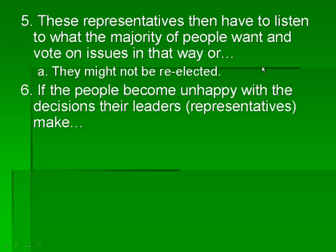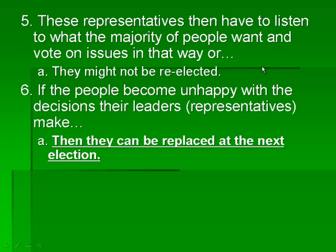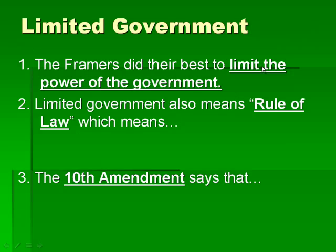If the people become unhappy with the decisions their leaders or representatives make, then they can be replaced at the next election. If the person we sent up to the office votes against everybody's wishes — they said they'd vote yes but voted no — we're not going to re-elect them. They're going to get kicked out. The framers did their best to limit the power of the government, making sure people have a voice through voting, popular sovereignty, and republicanism, and ensuring the government doesn't take all the power away from the people.